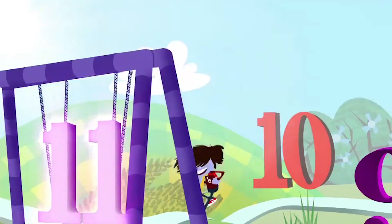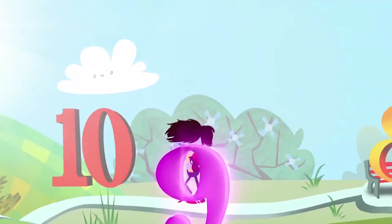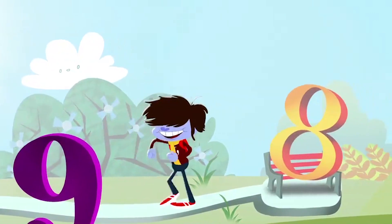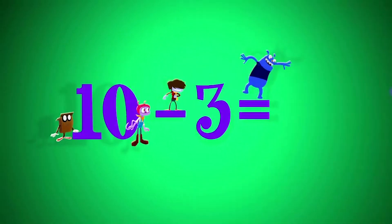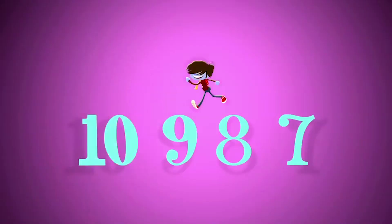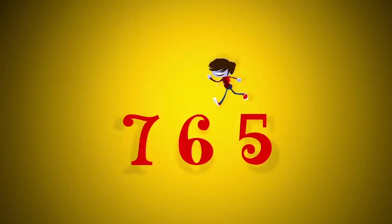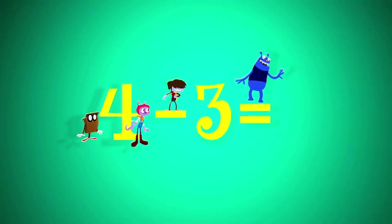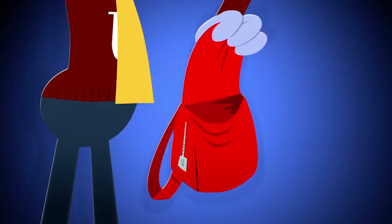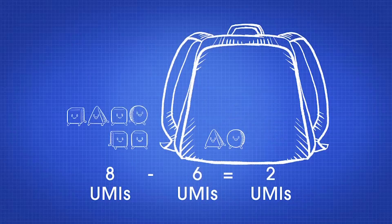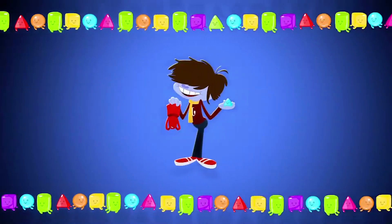We subtract when he counts back. You subtract by counting back. We subtract. Ten minus three equals seven — start at ten: nine, eight, seven. Seven minus two equals five. Four minus three equals one — start at four: three, two, one. There go the yumis, all but one. That's our song and now we're done. Countback!